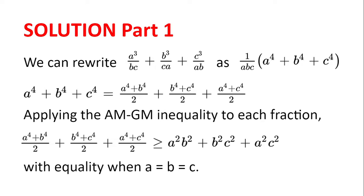Now we can rewrite A to the power of 4 plus B to the power of 4 plus C to the power of 4 as: A to the power of 4 plus B to the power of 4 divided by 2, plus B to the power of 4 plus C to the power of 4 divided by 2, plus A to the power of 4 plus C to the power of 4 divided by 2.